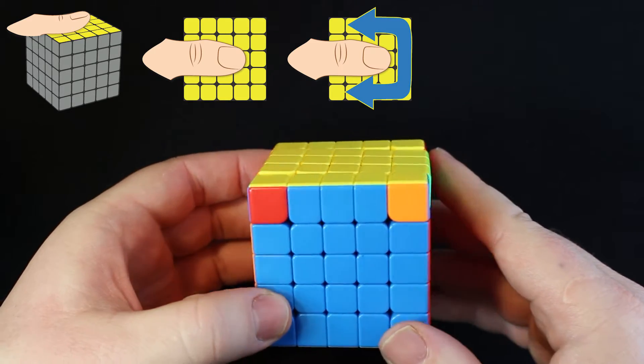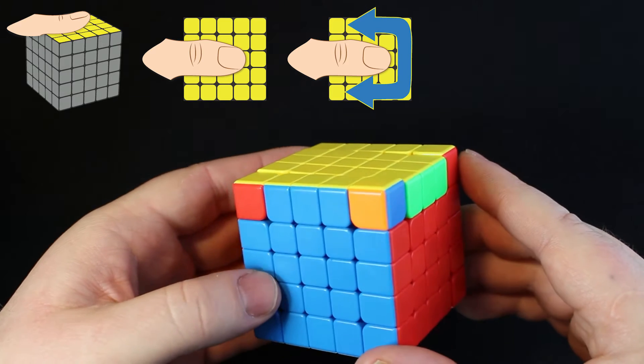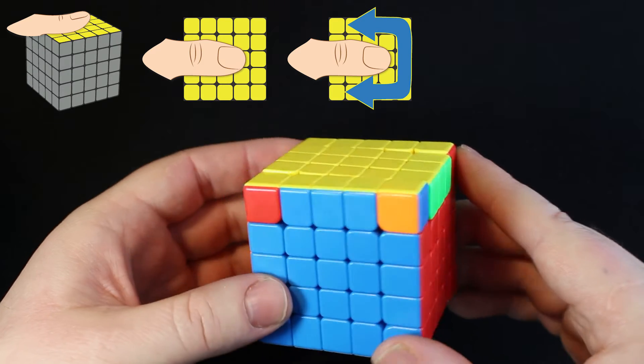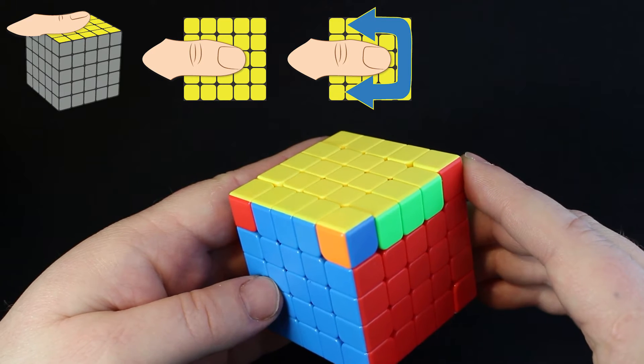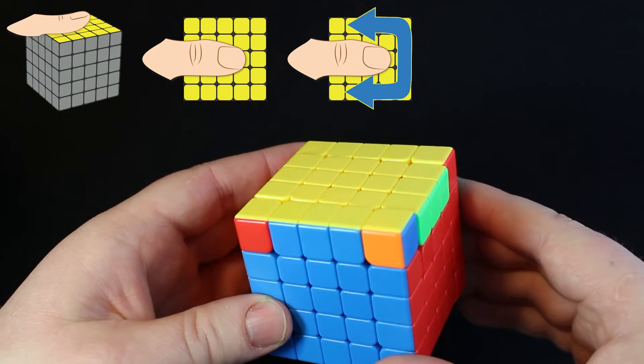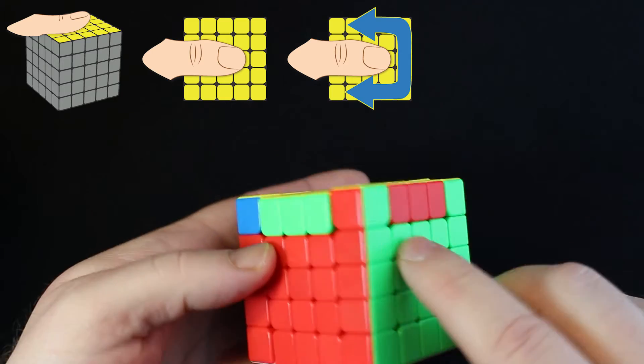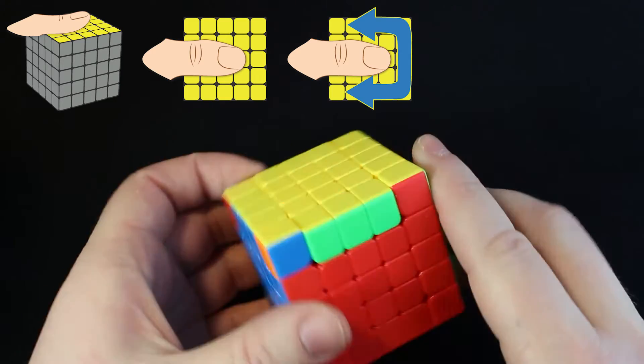Now, what if you don't have any matching corners? Don't worry about it. Just put any random side to the back and just do the same moves that we're about to do and then you will have matching corners and then put those in the back. So since we already have them in this example, we're moving them to the back.